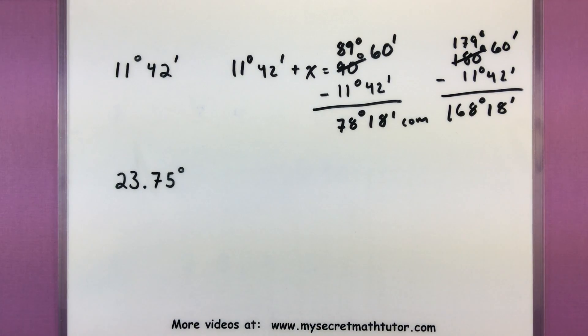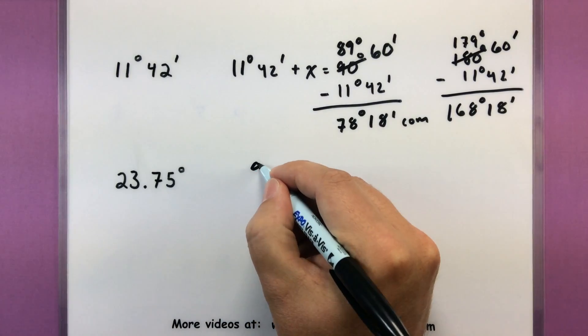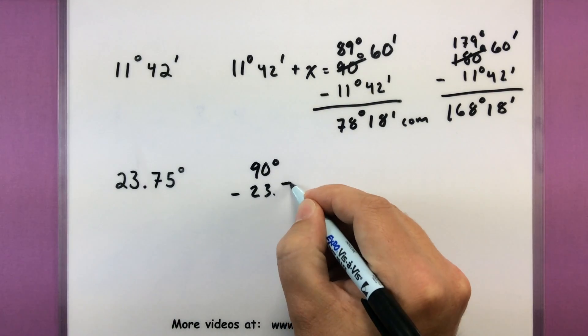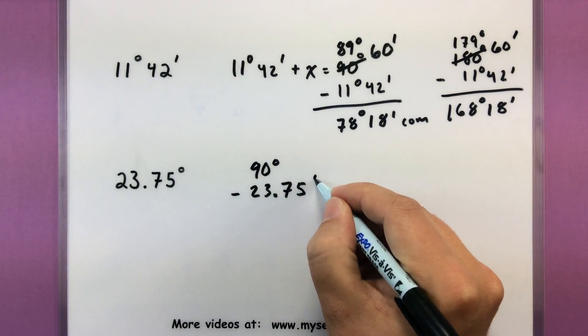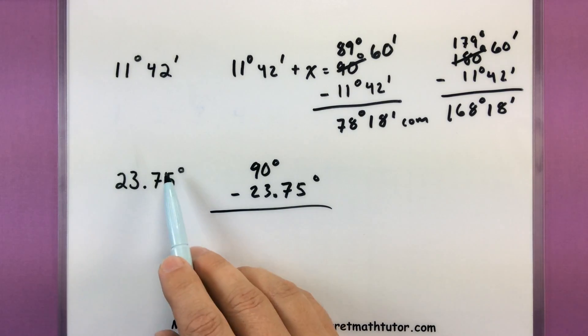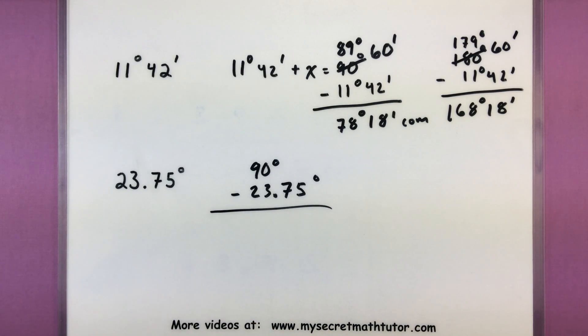Same idea with this one. This one is not written in degrees, minutes, and seconds. This is actually just written as a decimal. So 23.75 degrees. You're going to go through that same borrowing process. Just notice that since this is not degrees, minutes, and seconds, you don't necessarily need to borrow and turn it into 60. That's not what this really represents. When it's written as a decimal, it's really broken down into tenths. Kind of like a normal number.